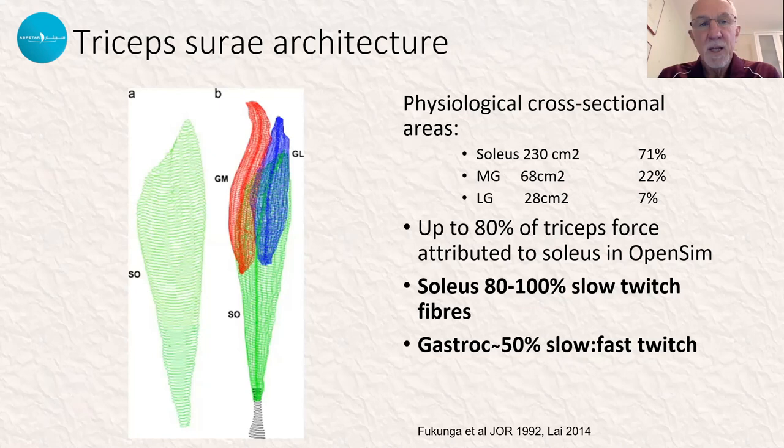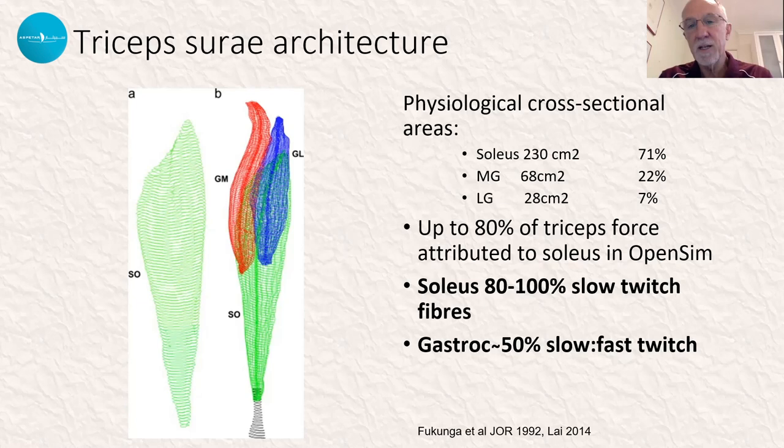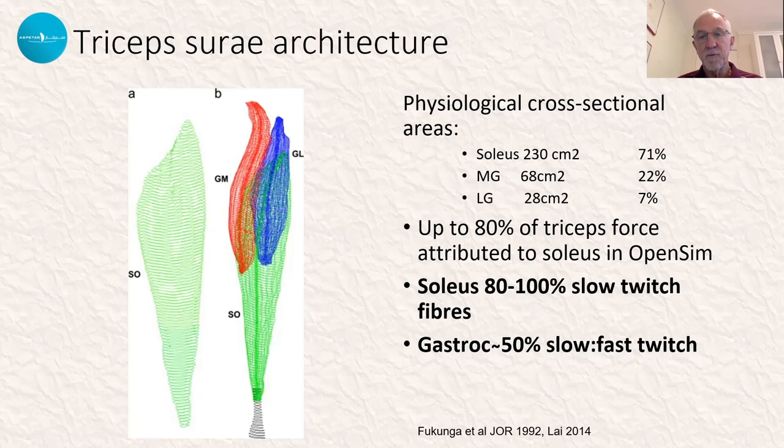The first thing to appreciate is the very large cross-sectional area, or physiological cross-sectional area, of soleus. That's because of its multi-pinnate nature. As you see here, it really dominates the proceedings as far as cross-sectional area goes, and as a result produces around 80% of the overall force of the triceps surae.